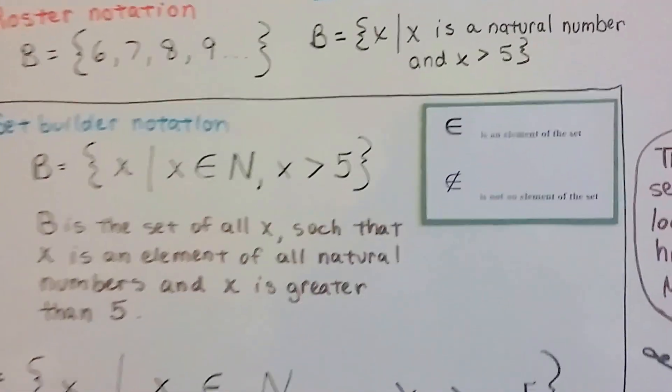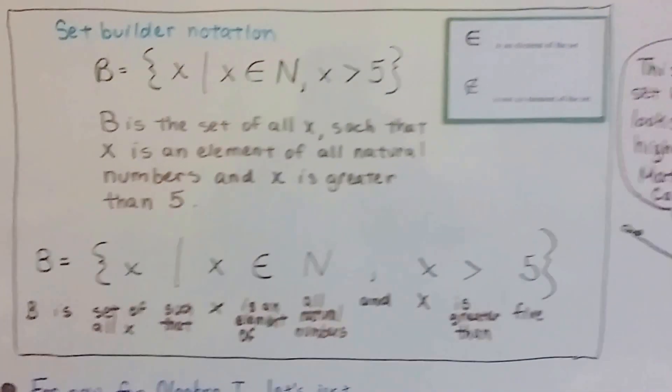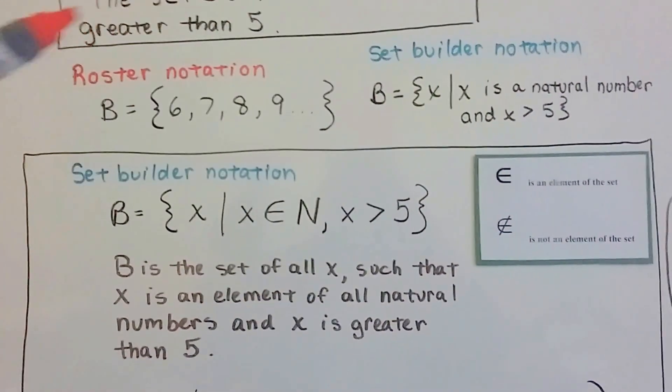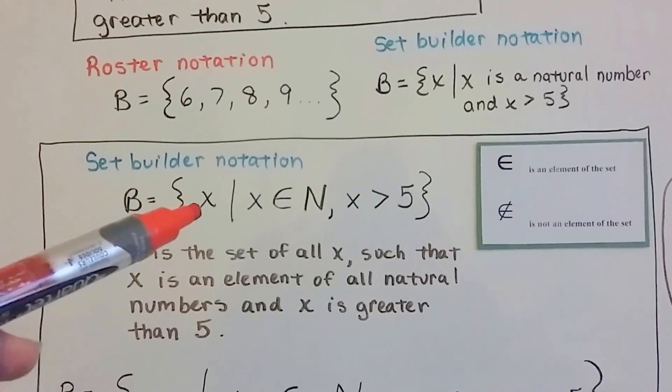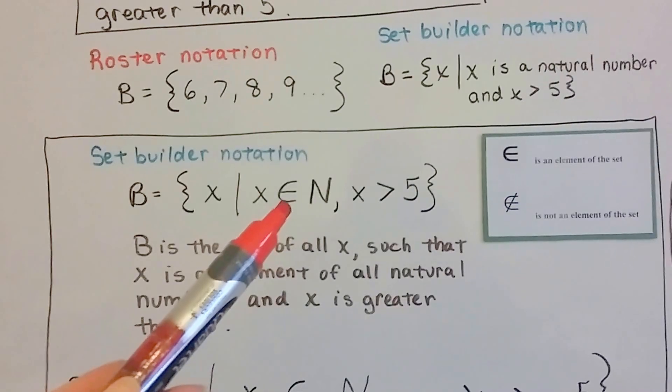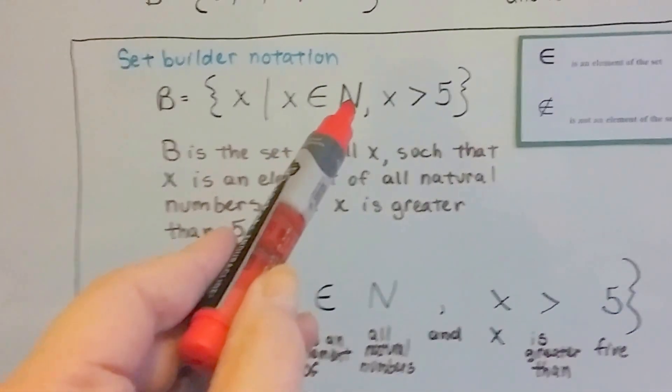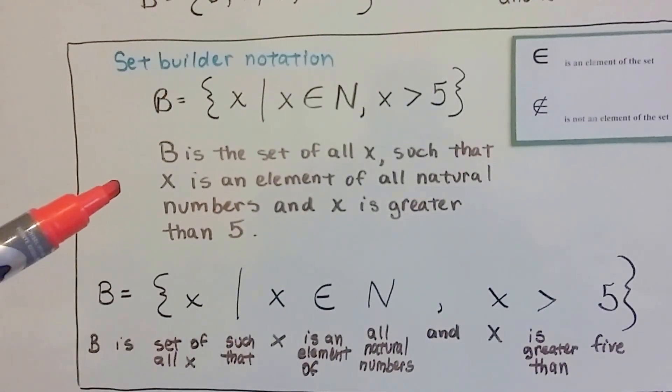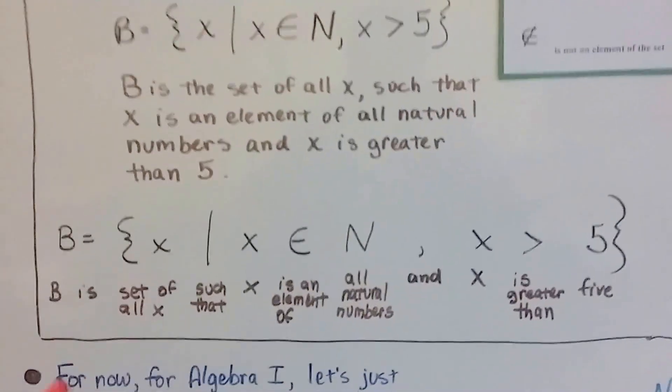Now, into higher math, this is what Set Builder Notation looks like for higher levels of math, like calculus. This is what they would do. For this same statement right here, the set B of natural numbers greater than 5, it would be written as B equals x such that x is an element of n for all natural numbers. See? We're using that capital N here. It's an element of the natural numbers. And x is greater than 5. And the way we would read it is, B is the set of all x such that x is an element of all natural numbers and x is greater than 5. This is how it breaks down.